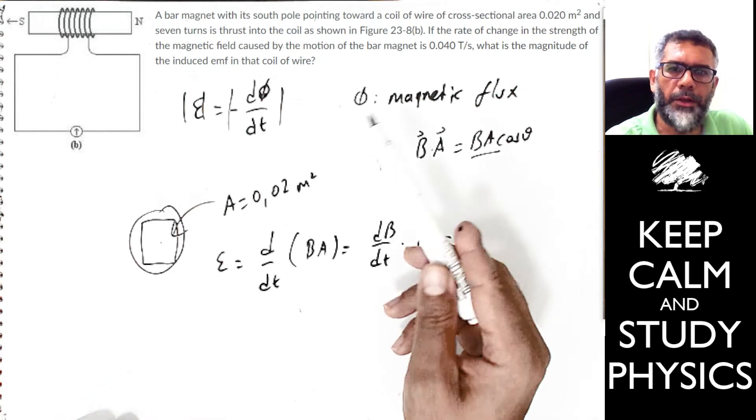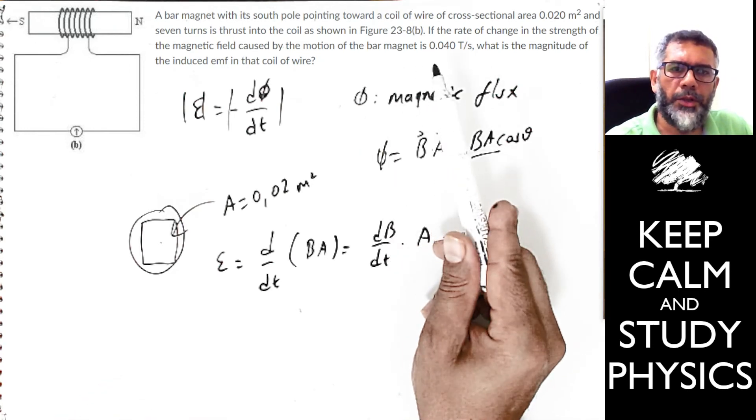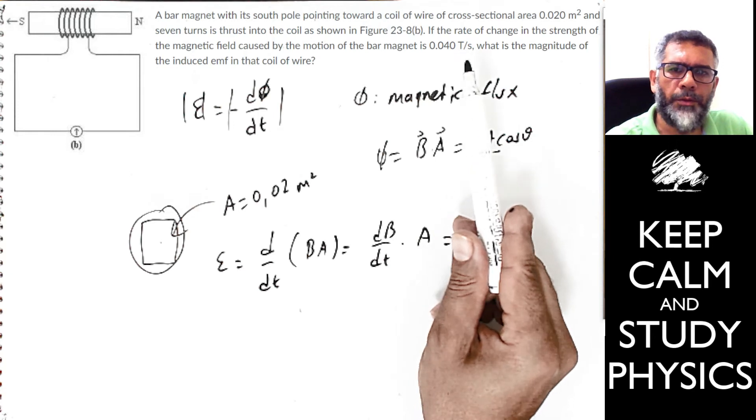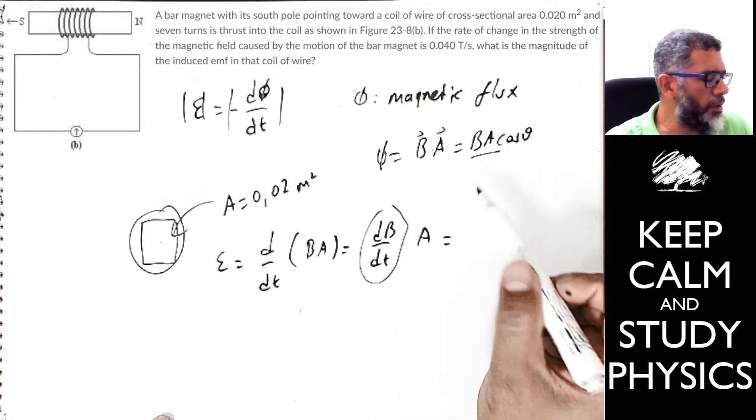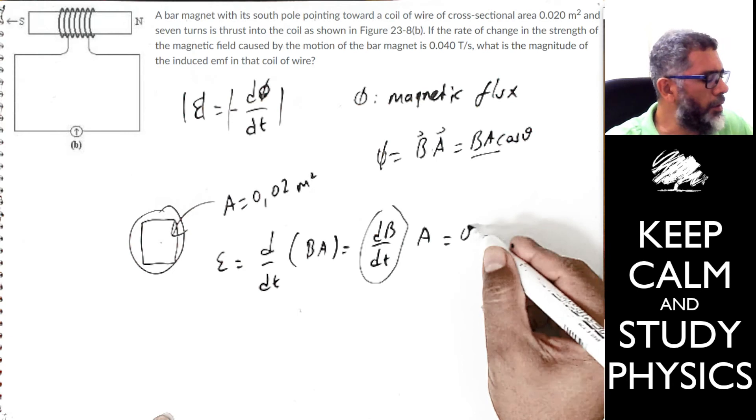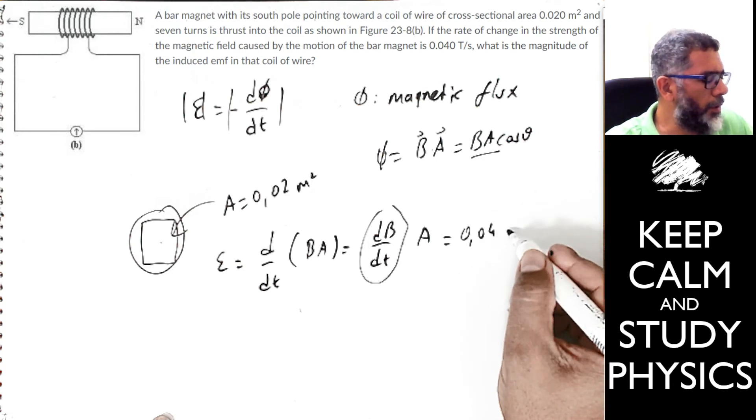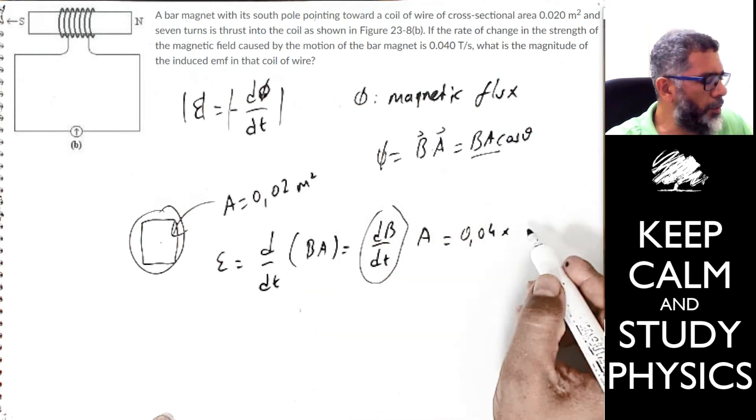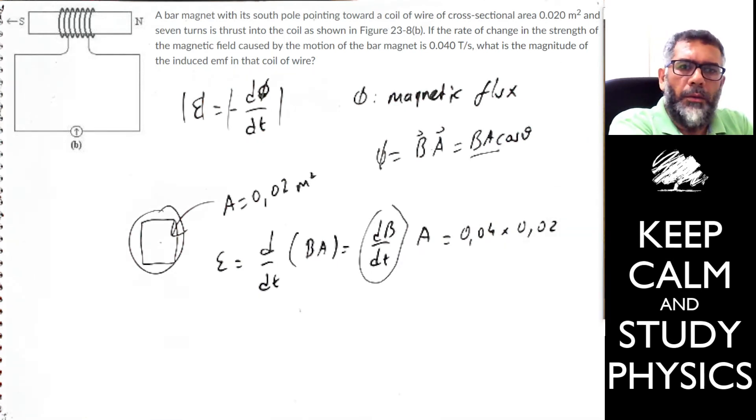So change in the magnetic field. But the change in the magnetic field is given in the problem. The change of the magnetic field is just 0.04 tesla per second. So just instead of this, we can write 0.04 multiplied by the area, which is 0.02, right?